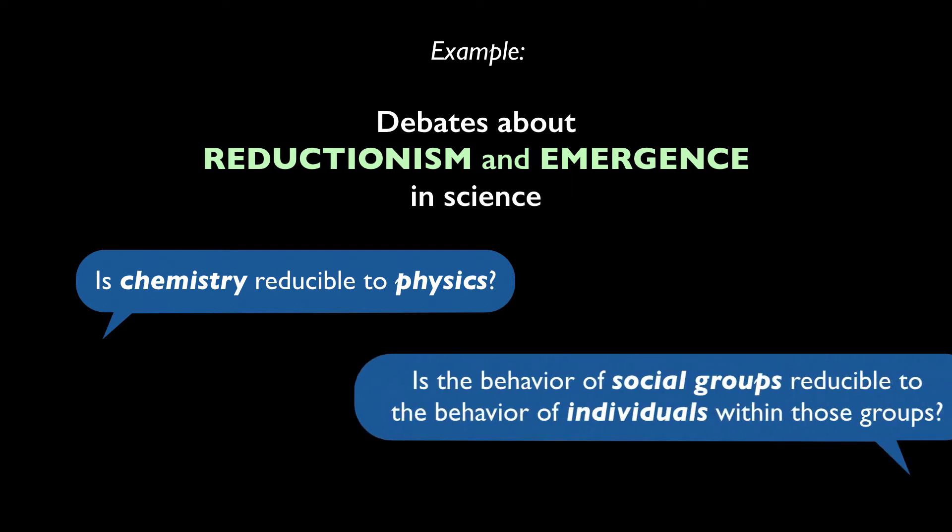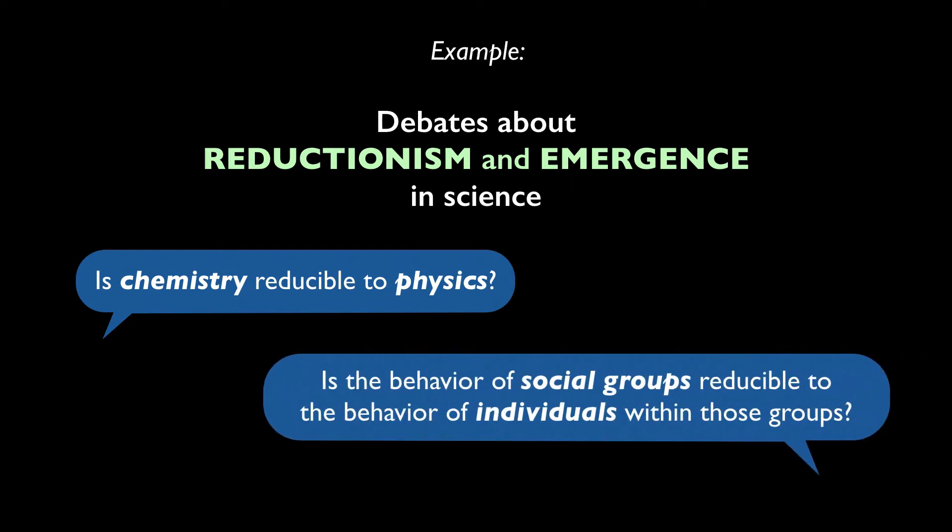Consider this question. Is the behavior of social groups reducible to the behavior of individuals within those groups? This issue has been hotly debated throughout the history of the social sciences. It's tied up with a host of questions like, are there laws of social development and social change? Is social change predictable? And if so, on the basis of what? Is collective social behavior determined by the psychological states of individual people? Or are those psychological states determined in part by social facts and social context?